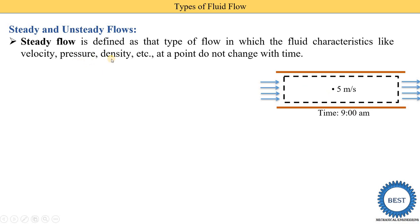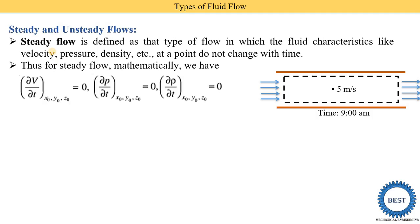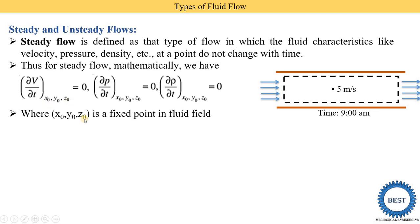Instead of velocity, we can also measure pressure or density to understand steady flow. Mathematically, steady flow is defined by three equations. The partial derivative of velocity with respect to time equals zero at a fixed point (x₀, y₀, z₀) in the fluid field. Similarly, the partial derivative of pressure with respect to time equals zero, and the partial derivative of density with respect to time equals zero.